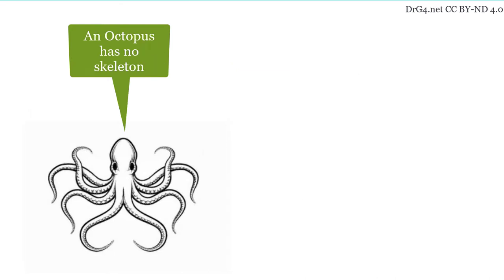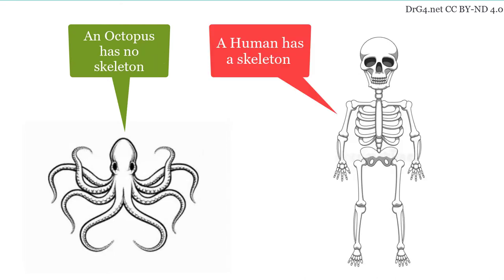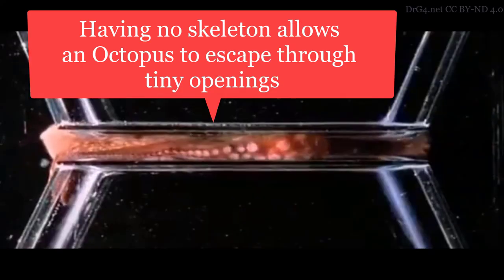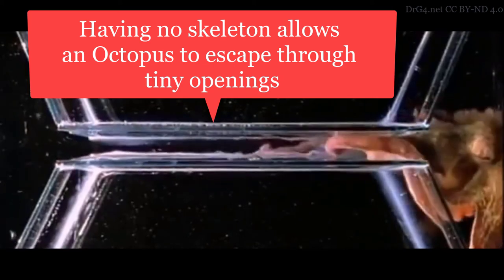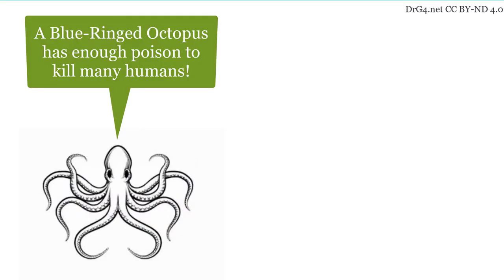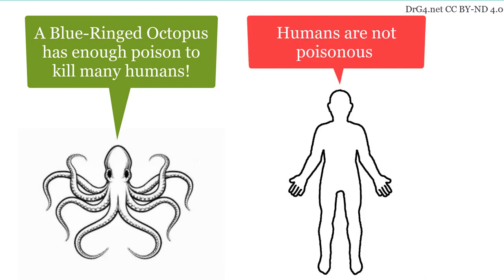An octopus is mostly bendy muscle, while a human has a stiff skeleton. An octopus can escape through tiny openings, whereas a human would get stuck. A blue-ringed octopus has enough poison to kill many humans. Humans are not poisonous.